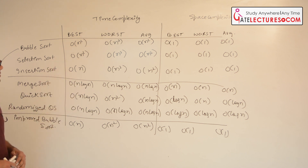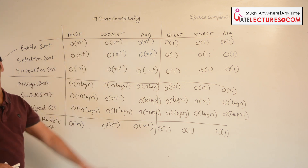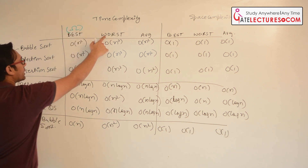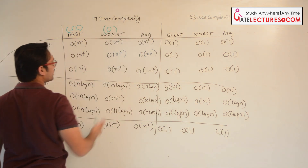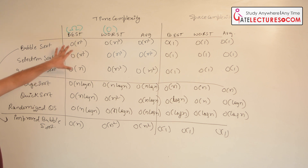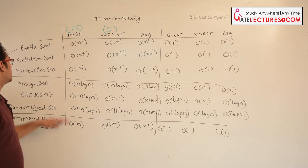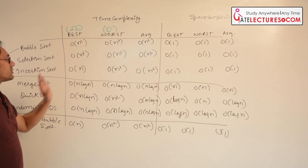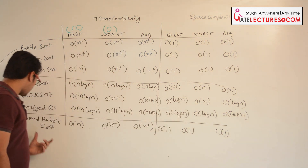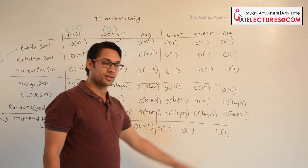Let us view all the sorting algorithms. In case of bubble sort, best case, worst case, and average case all take order of n square time. Generally, best case uses omega notation, worst case uses order notation, and average case uses theta or order notation. For simplicity, we use order notation in every case here. In case of improved bubble sort, best case is order of n, otherwise order of n square, with order of one space in all cases.